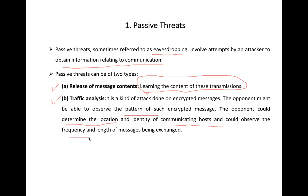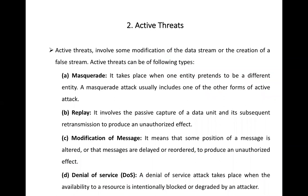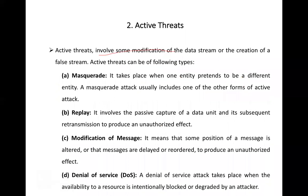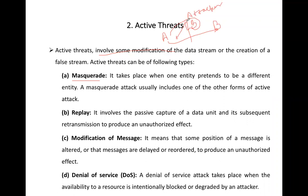The second type of threats are called active threats. As I told you, active threats involve the modification of the content of the message — modification takes place. The first type is Masquerade. In a masquerade attack, the attacker tries to pretend on someone else's behalf. Suppose A and B are communicating — A is sharing information with B — the attacker pretends to be B and tells A that it is B, thereby capturing all the information that A intended for B. This is called masquerade.